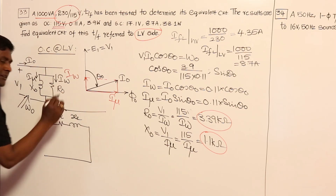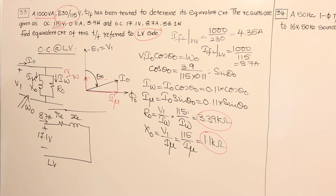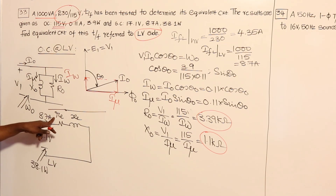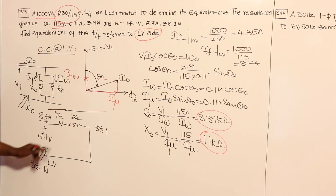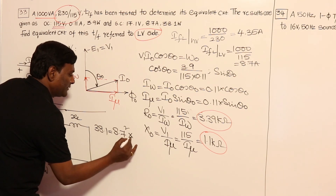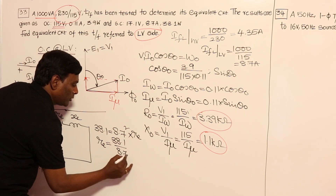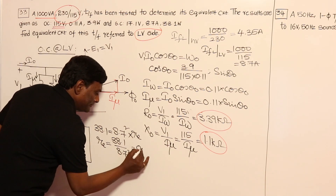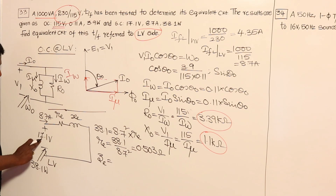The SC test equivalent circuit has RE and XE referred to LV side. The voltmeter reading is 17.1 V, current is 8.7 A, and wattmeter reading is 38.1 W. The wattmeter power is consumed entirely in the resistance: W_SC = I² × RE, so 38.1 = 8.7² × RE. Therefore RE = 38.1 / 8.7² = 0.503 ohm. Now ZE = V / I = 17.1 / 8.7.